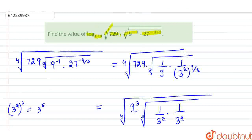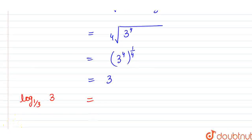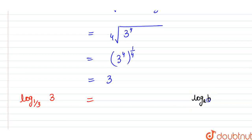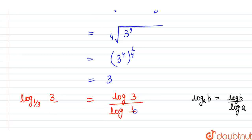In the question we have to find the value of log to the base 1 by 3 of 3, since we solved the inner expression to be 3. We will convert this to the natural base using the property: log base A of B equals log B divided by log A. So we can write it as log 3 divided by log (1 by 3).